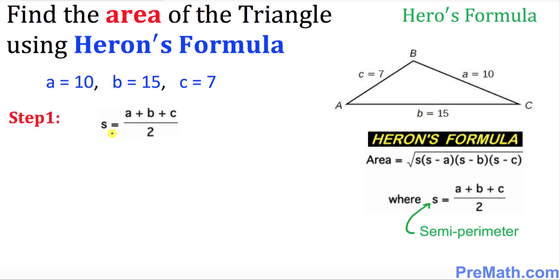So in the very first step, let's go ahead and calculate the value of S by adding all these three numbers A, B, and C, and then dividing by 2. So let's add them up: A is 10, B is 15, and C is 7, divided by 2. If you add all those numbers on the numerator, that's going to give you 32 divided by 2, so S turns out to be 16.